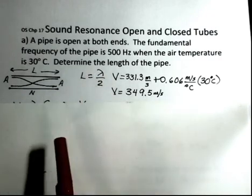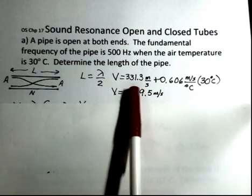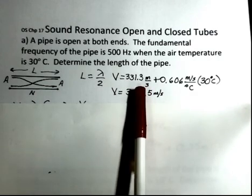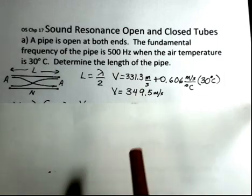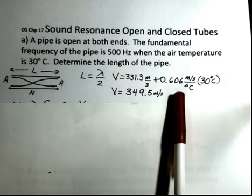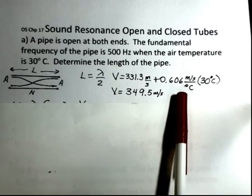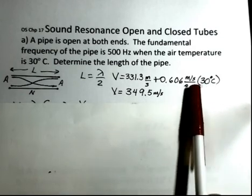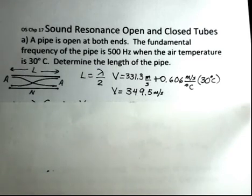We need to find the wavelength. Well, the speed of sound depends on the temperature of the air. And there are various approximations to this formula. But I'm using 331.3 meters per second, and then the effect of temperature, 0.606 meters per second faster for each degree Celsius above 0 degrees Celsius. Our temperature is 30, so we multiply here and check this on your calculator. For this condition, I have speed of sound 349.5 meters per second.